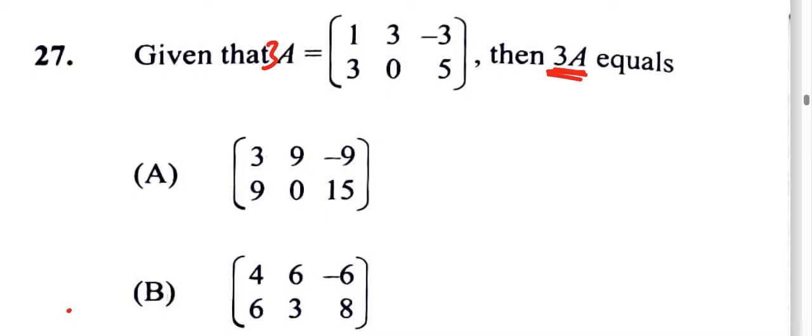3 times 1 becomes 3, this becomes 9, this becomes negative 9, this becomes 9, this would be 0, and 3 times 5 is 15. So we're looking for 3, 9, negative 9, 9, 0, 15—that's option A.